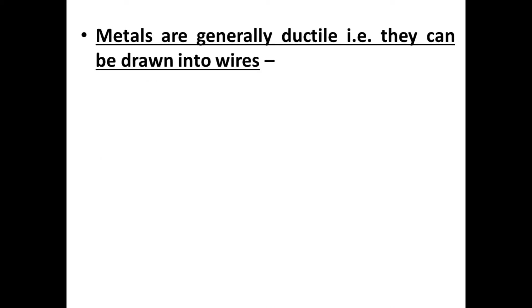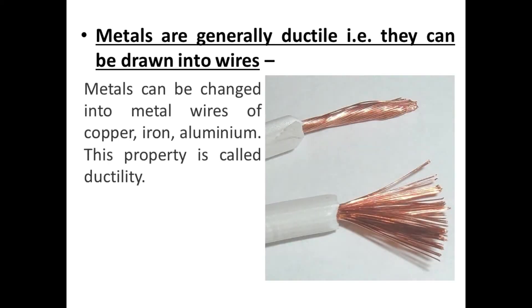Next, metals are generally ductile — next property is ductility. This means they can be drawn into wires. Metals can be changed into metal wires of copper, iron, and aluminium. The electric wires in our homes are made up of copper. This property is called ductility.